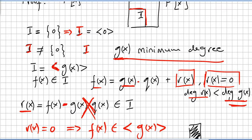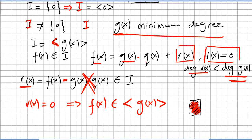Since that situation is totally impossible, the only possibility is that r(x) = 0. But that implies f(x) = g(x)·q(x), meaning every element of the ideal can be written in the form R·a. And that proves the theorem: if F is a field, F[x] is a principal ideal domain.